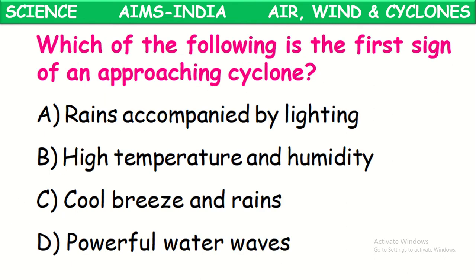Which of the following is the first sign of an approaching cyclone? The answer is powerful water waves in the oceans. Because of the high pressure winds from the cyclone, the water in the oceans creates high powerful waves. This indicates the approach of a cyclone even when it is very far from land.